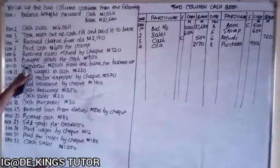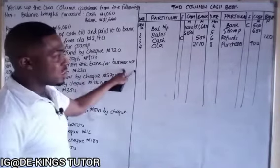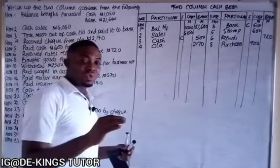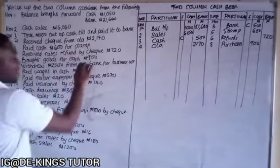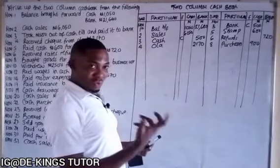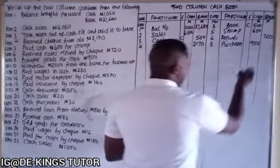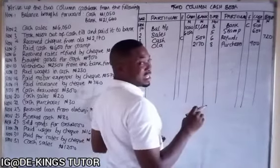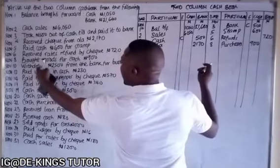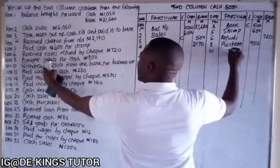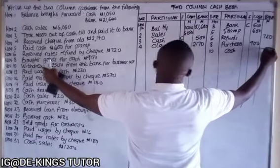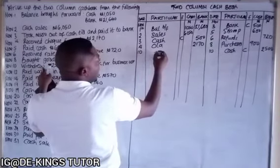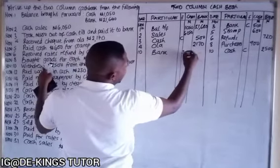November 10 — withdrew 2,500 from the bank for business use. This is different from personal use — since it's for the business, it's still a contra entry. The bank is giving it out, so on the credit side, under particulars write 'cash' with 2,500 in the bank column. Mark folio 'C'. On the debit side, cash is receiving 2,500.